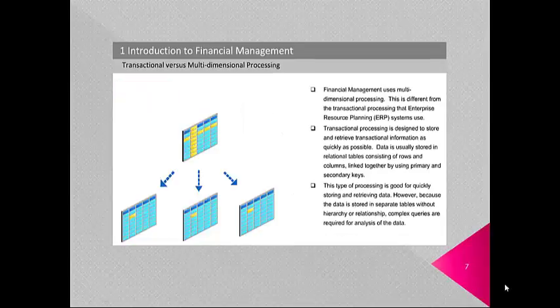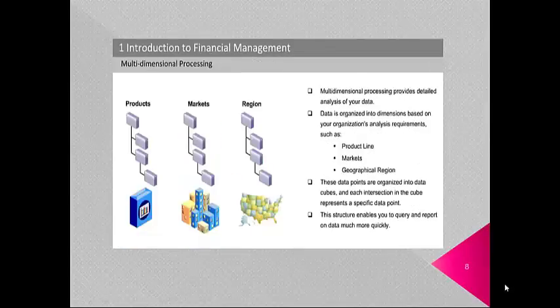Financial Management uses multi-dimensional processing, which is different from the transactional processing that ERP systems use. Multi-dimensional processing provides detailed analysis of your data. Data is organized into dimensions based on your organization's analysis requirements, such as product line, markets and geographical region. These data points are organized into data cubes, and each intersection in the cube represents a specific data point. This structure enables you to query and report on data much more quickly.